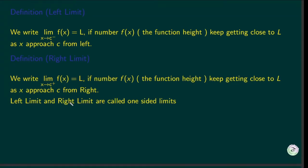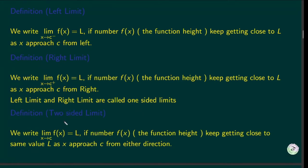Now I'll introduce a new definition — the two-sided limit. We write the limit of f(x) as x goes to c equals L if the function value f(x) keeps getting close to the same value L as x approaches c from either side. This means the two-sided limit exists only if the right limit and left limit are both defined and equal to L.